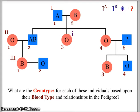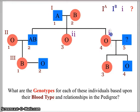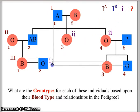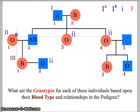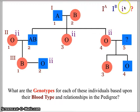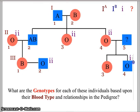So little i, little i for the first daughter with O blood, little i little i for the second daughter, little i little i for the husband in generation three, and little i little i for the son in generation three. Those are automatics — we know the only way you can get O type blood is if you have the homozygous recessive little i, little i.